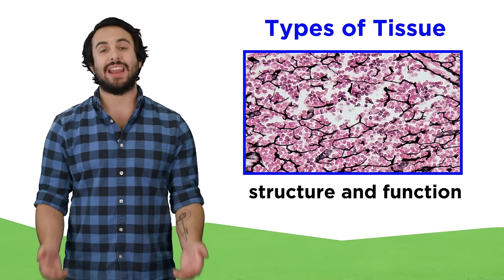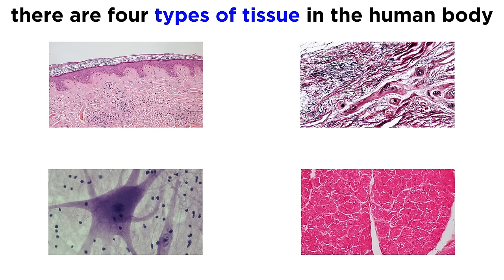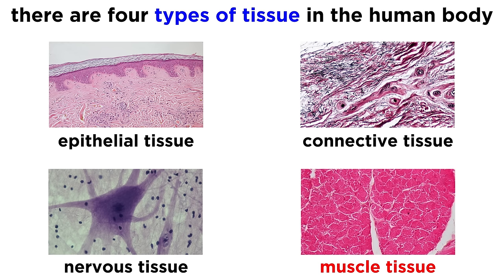So let's go through a survey of these now. We will be looking at four types of tissue altogether, and those are epithelial tissue, connective tissue, nervous tissue, and muscle tissue. Let's start with epithelial tissue.